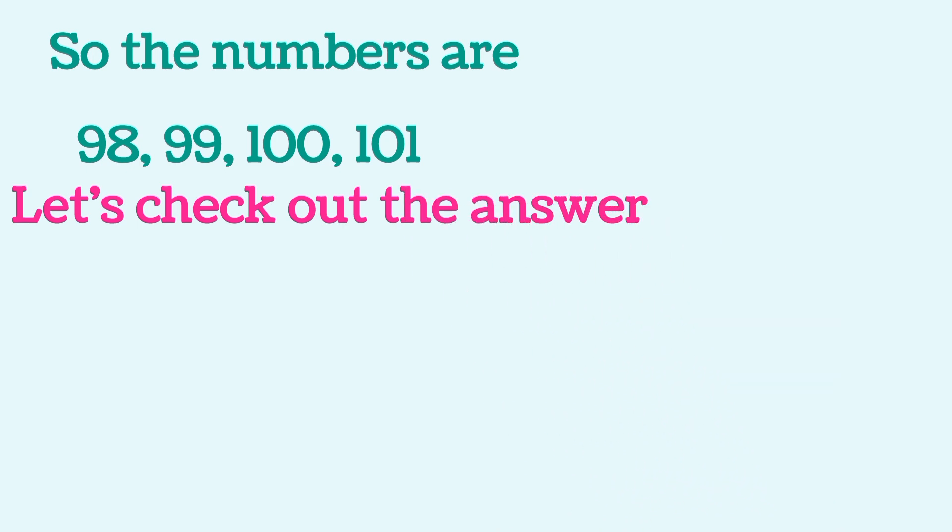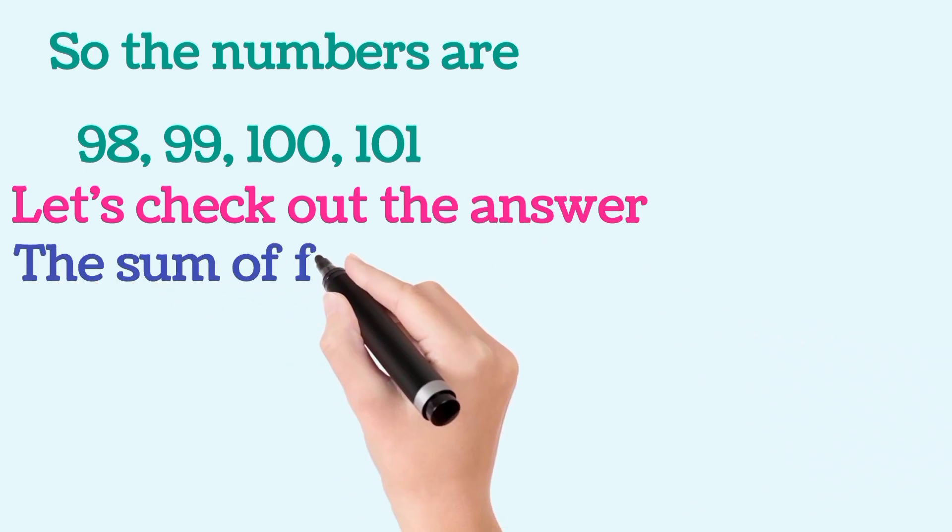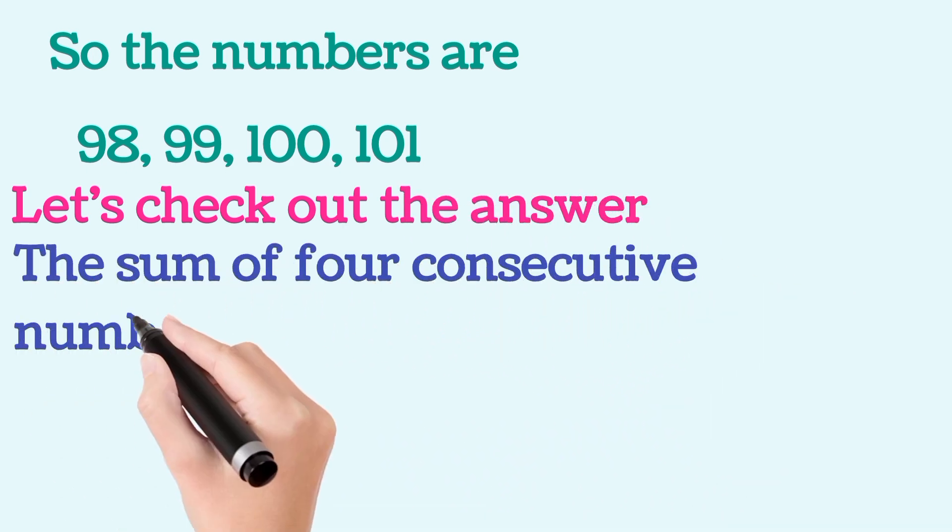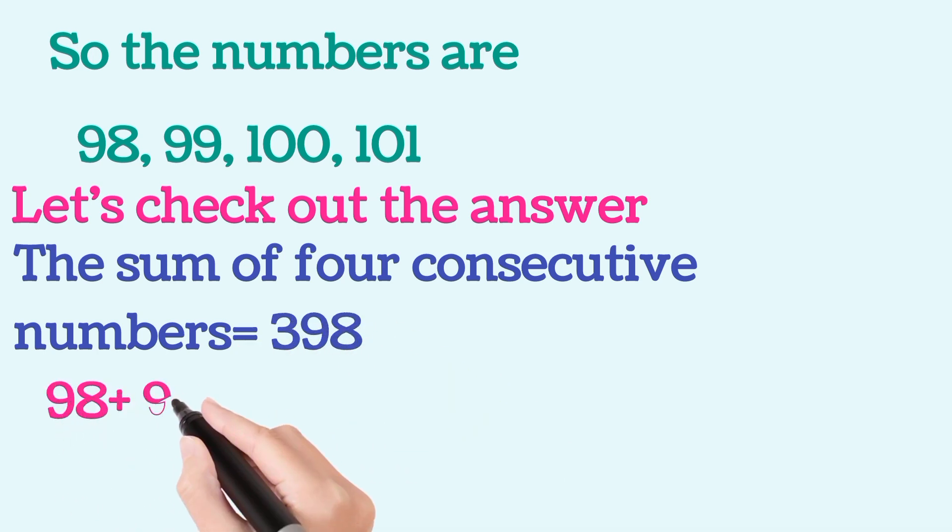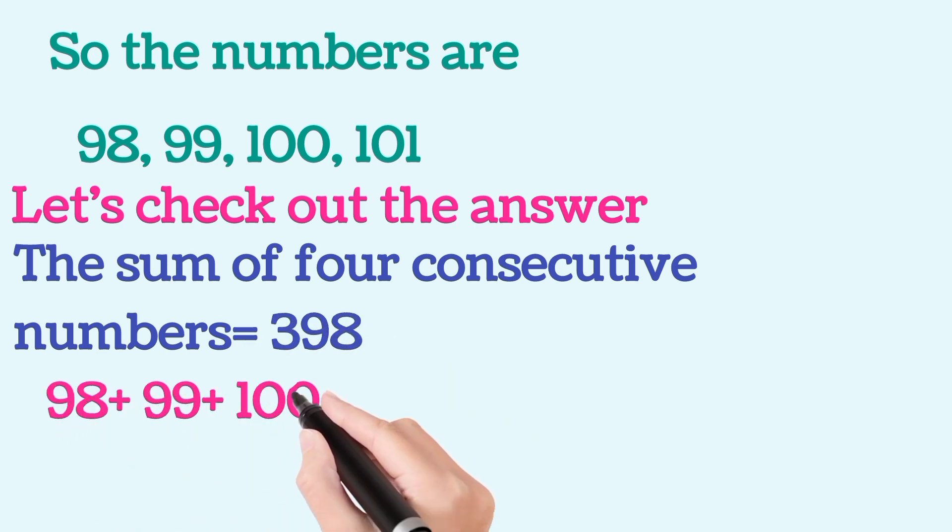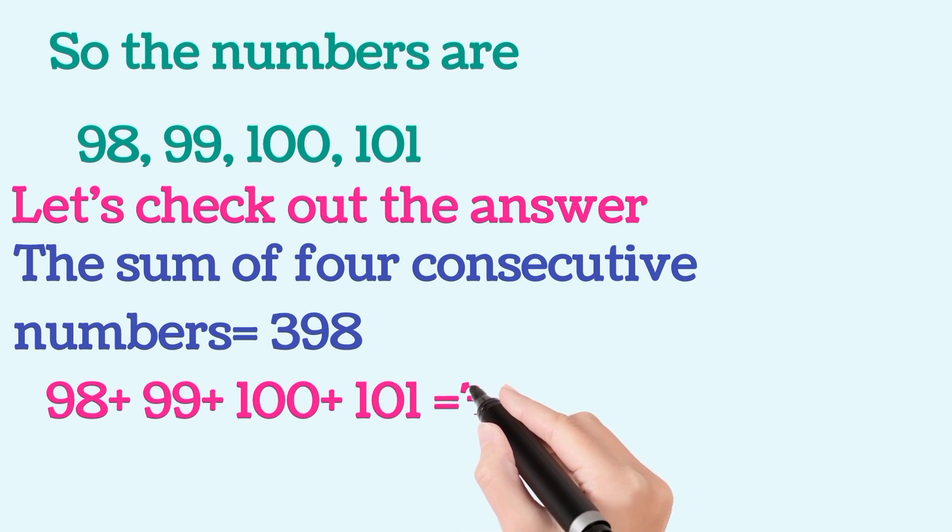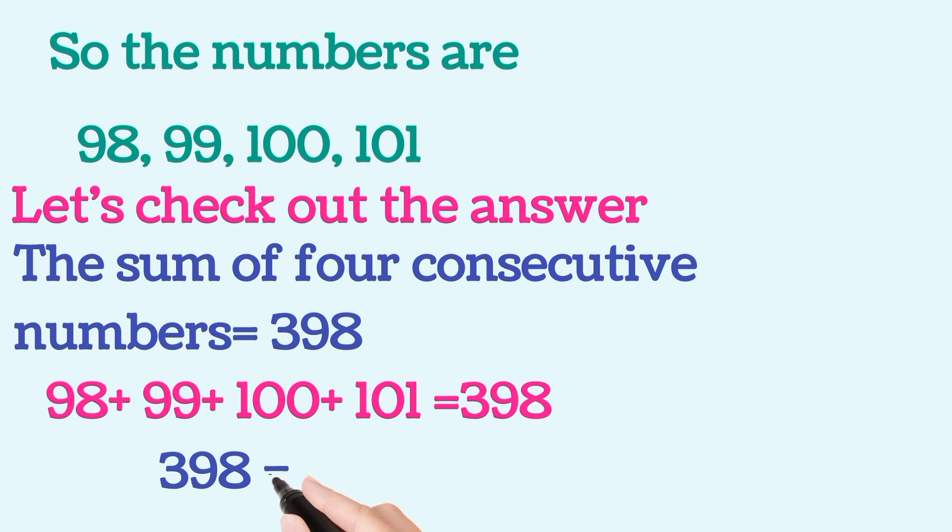Now, let us check out the answer. So, the sum of 4 consecutive numbers is equal to 398. So, 98 plus 99 plus 100 plus 101 is equal to 398. So, this is 398 which is equal to 398. So, LHS is equal to RHS. So, answer is correct.